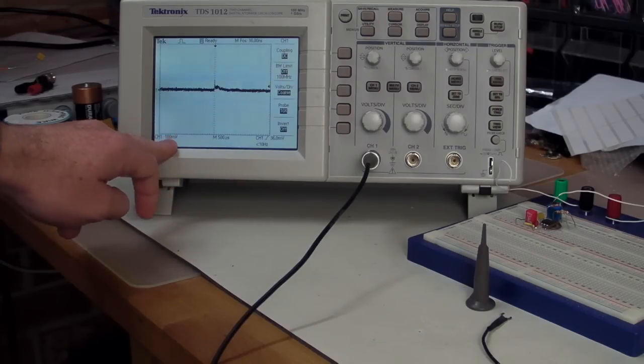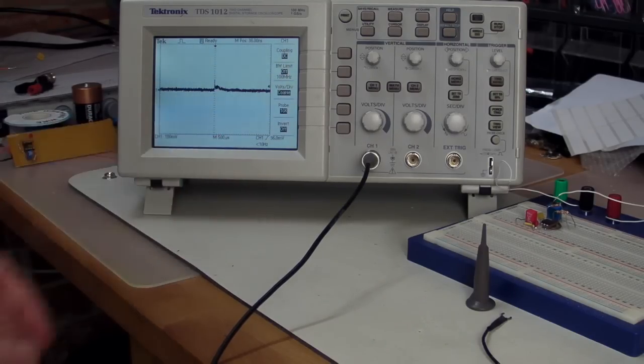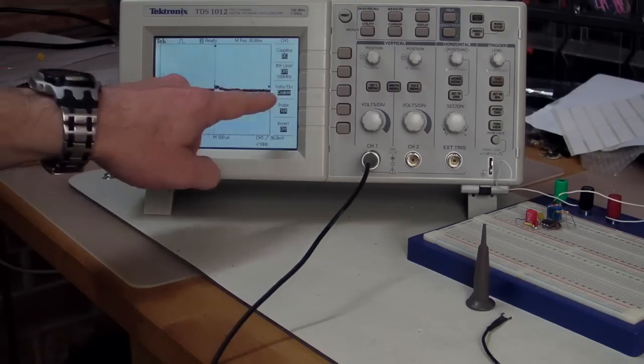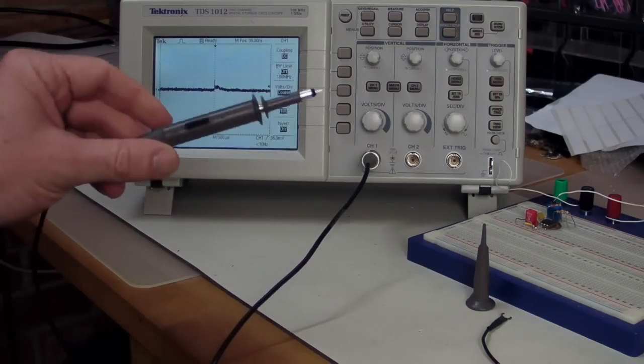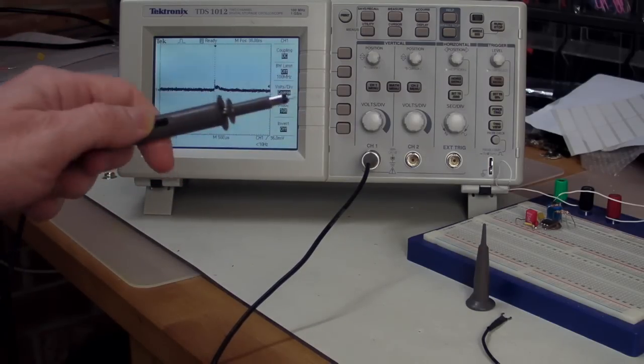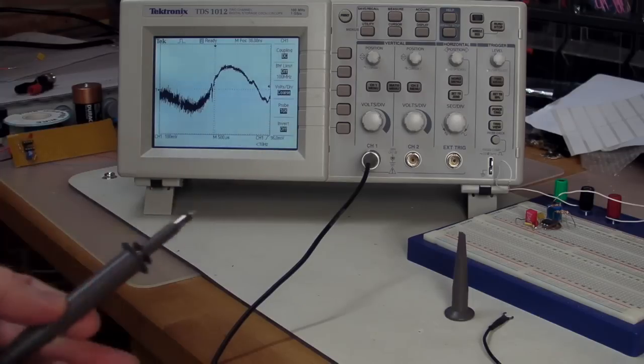Single channel, I've got it set up to 100 millivolts per division, 500 microsecond time base set to normal trigger, and the trigger level's at about 50 millivolts or thereabouts. I've got my probe here set to times 10 position, and watch this.